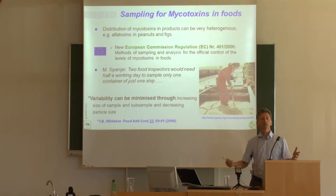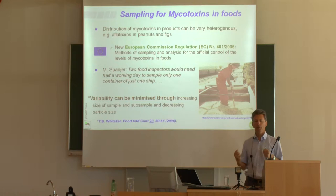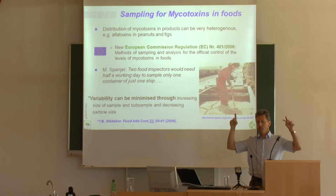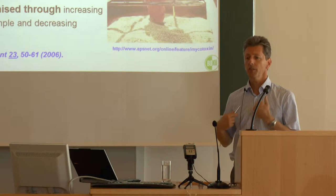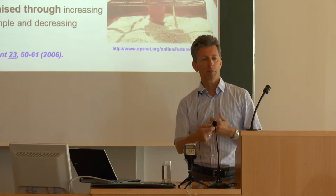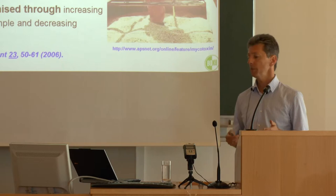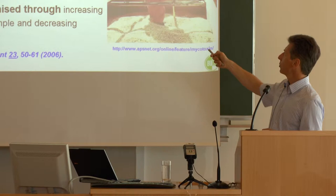Sampling for mycotoxins in food is always considered the most critical step. If there is a hot spot — say a peanut containing 500 micrograms per kilogram aflatoxin B1 — and you have other peanuts that are not contaminated at all, picking a non-representative one can give completely different results with differences of several hundred percent. Running a lab, we can only provide advice; we are not responsible for the sampling, but for control purposes such as importing grain, proper sampling is certainly of great importance.